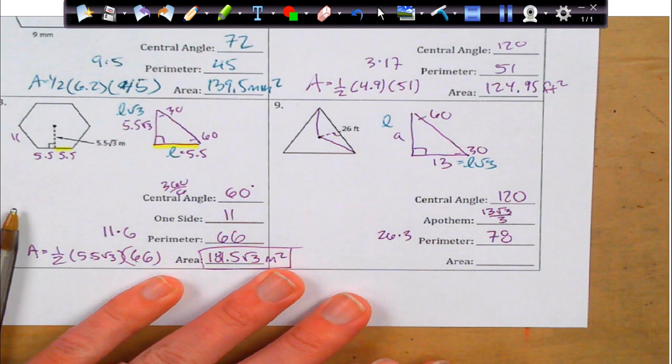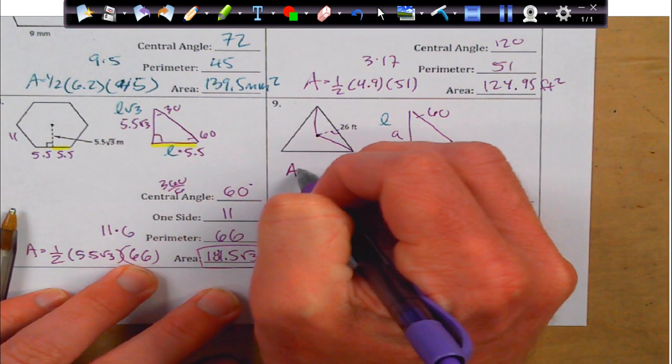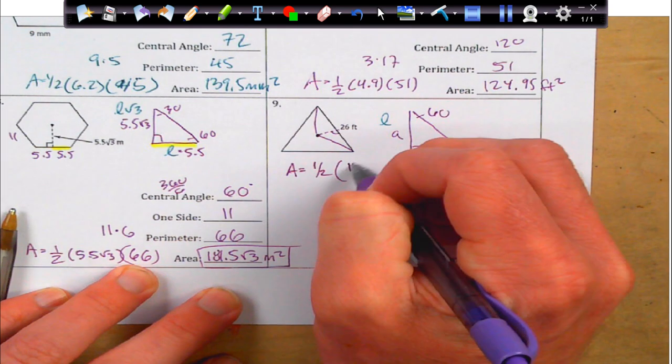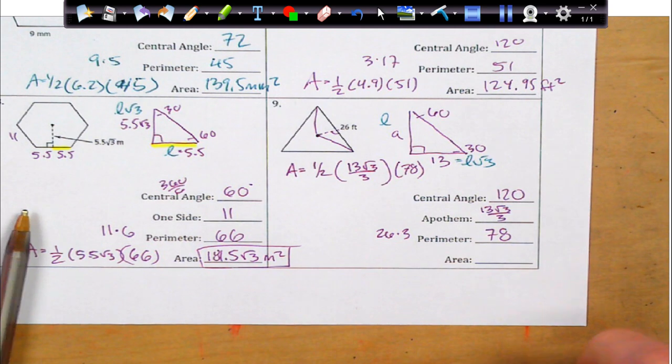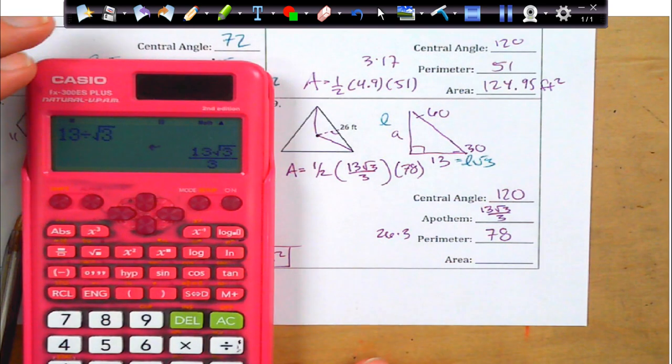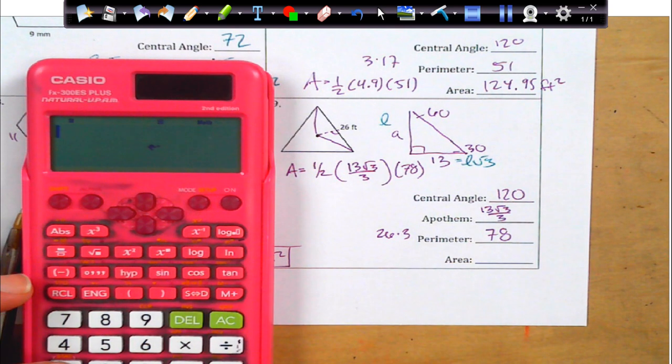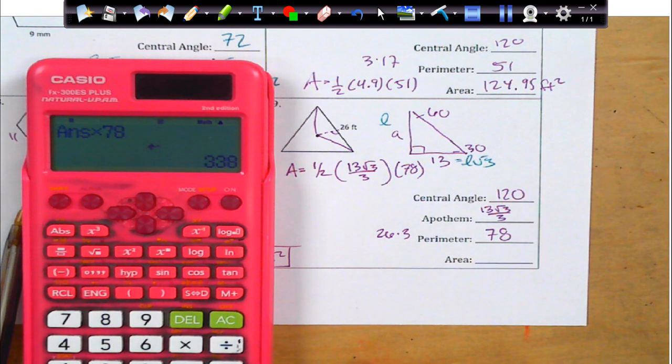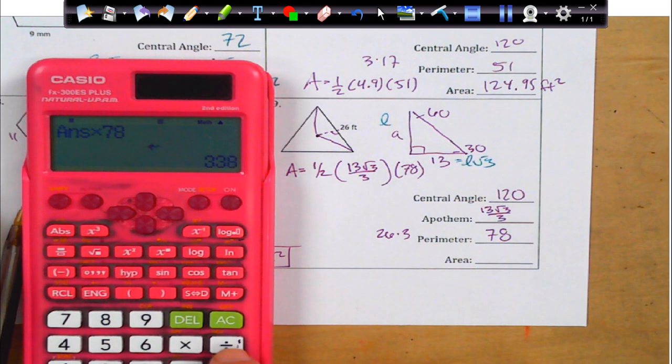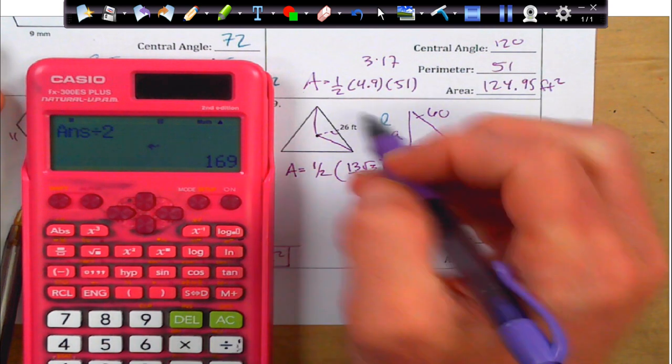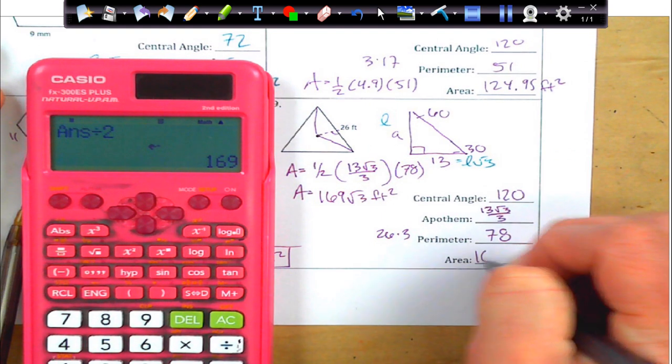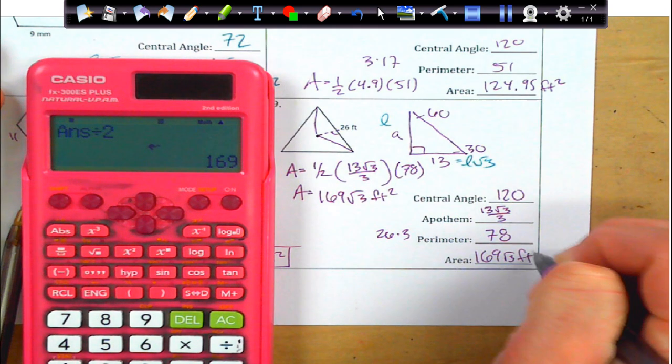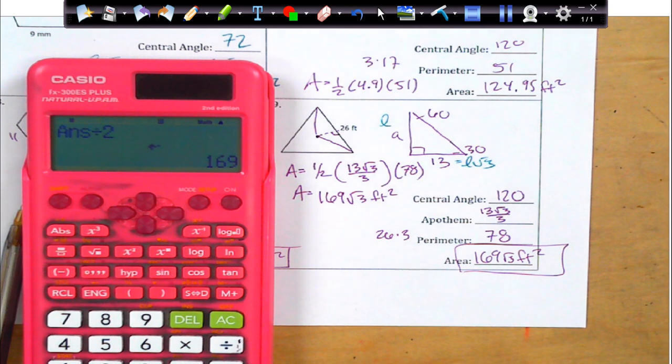13 rad 3 over 3. And we can actually deal with that, and I'm not too worried. And my area is going to be 1 half my apothem times my perimeter of 78. And again, how am I going to solve for this? Well, I kind of just leave the rad 3 out of it, and I just slap that in at the end. So, 13 divided by 3 is going to be, well, 13 divided by 3. And I just multiply it by 78. That gives me a whole number of 338. And then I divide it by 2, which gives me 169. But then I just leave the rad 3 on there, and my units of measure plug that in, and we are good to go. 169 rad 3 square feet.